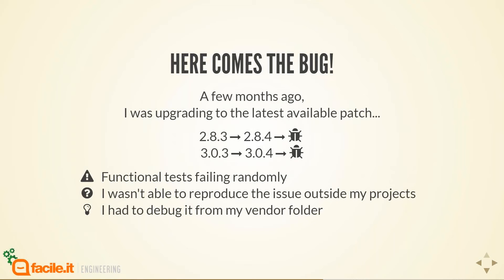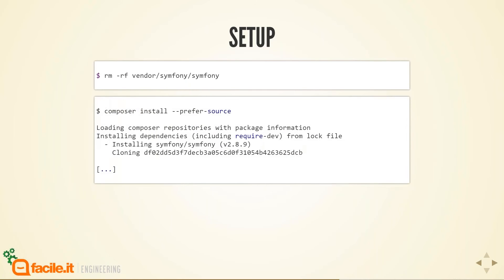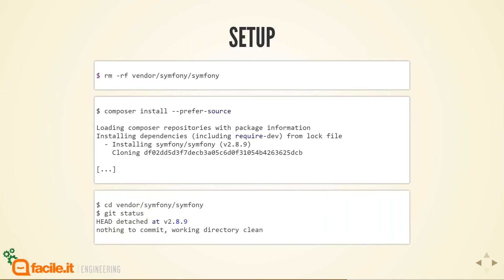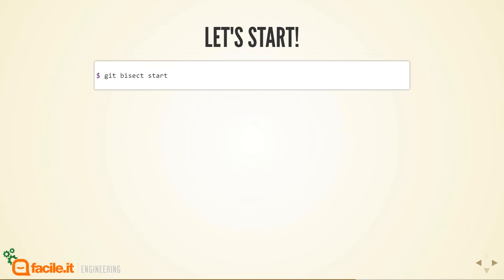I just had to remove my Symfony folder from the vendor and reinstall it using Composer with the --prefer-source option. In this way, Composer prefers to install the dependency using a full git clone of the project rather than a packaged archive. So I'm able to use git commands inside the Symfony vendor folder. To start bisecting, I just had to go inside the Symfony folder and issue the command git bisect start.